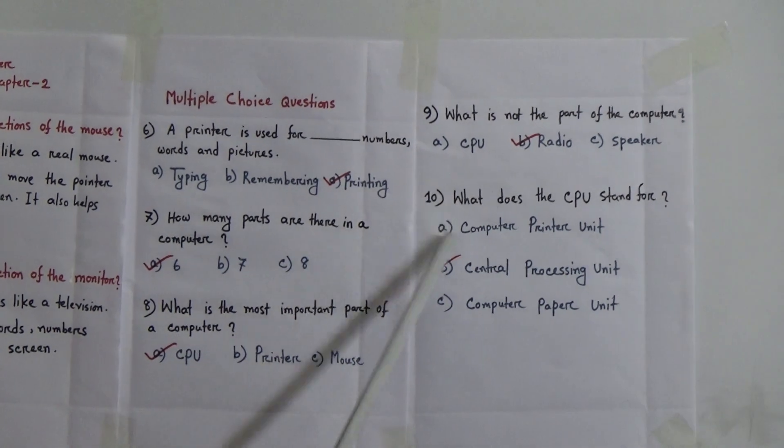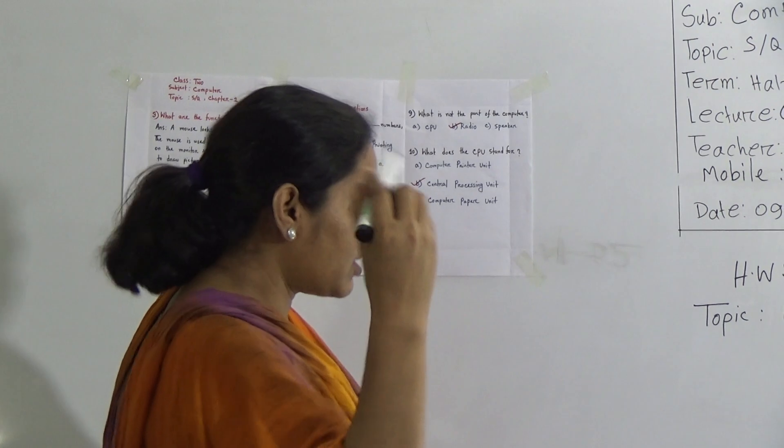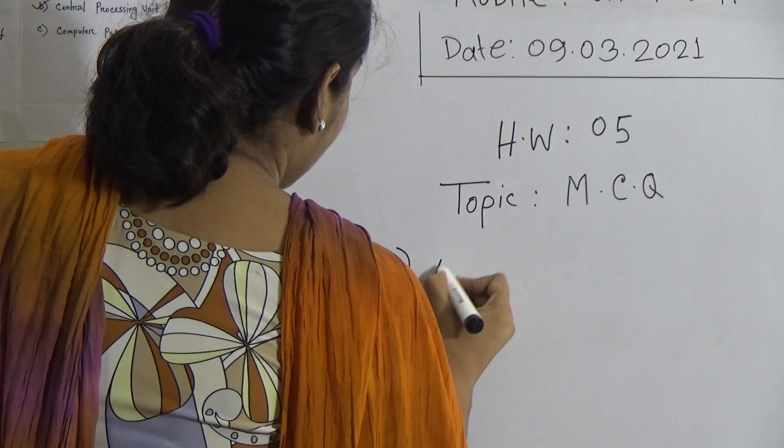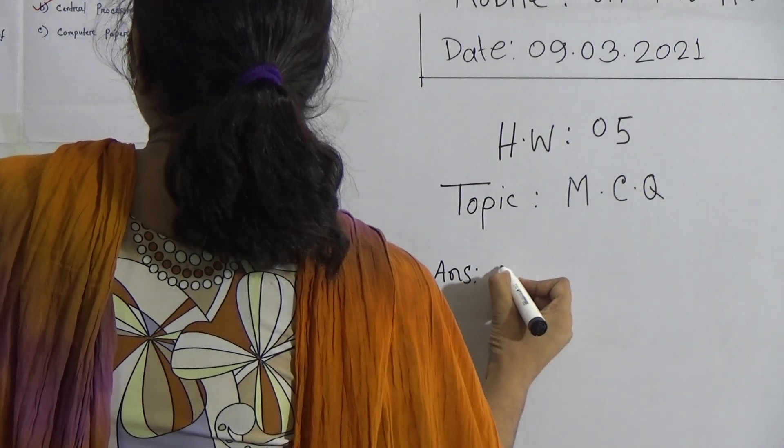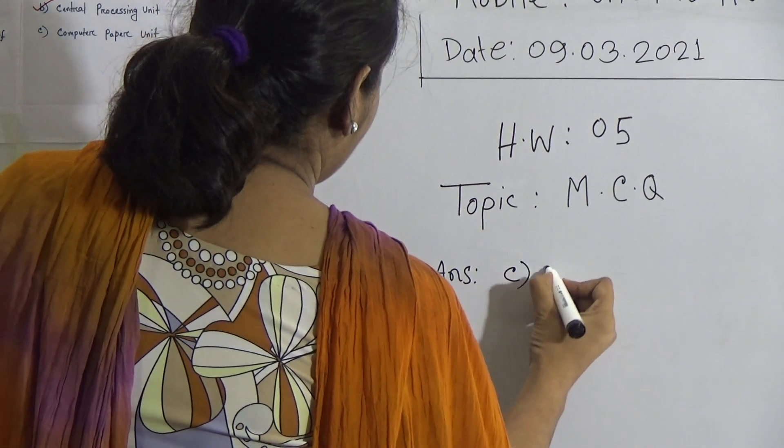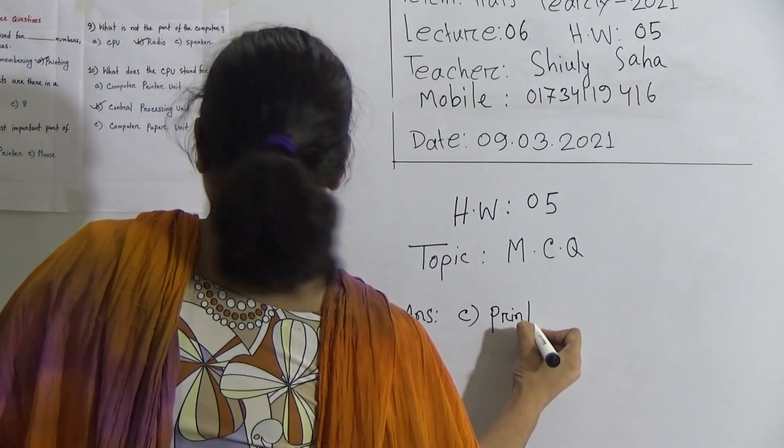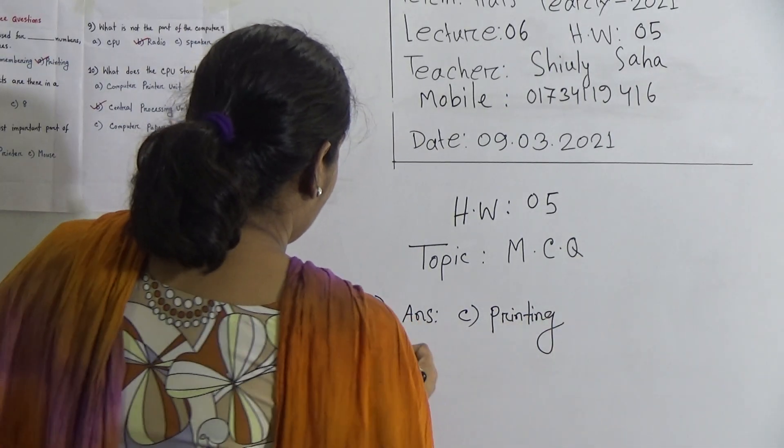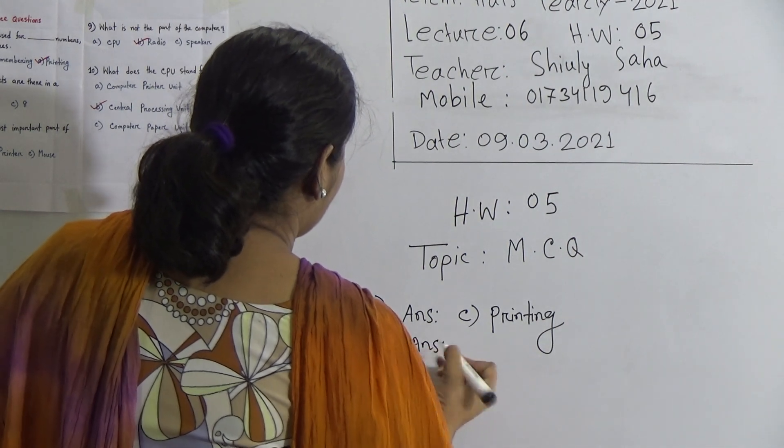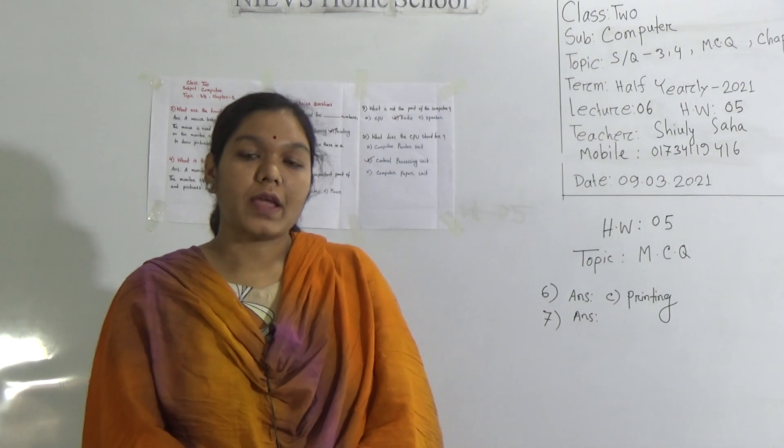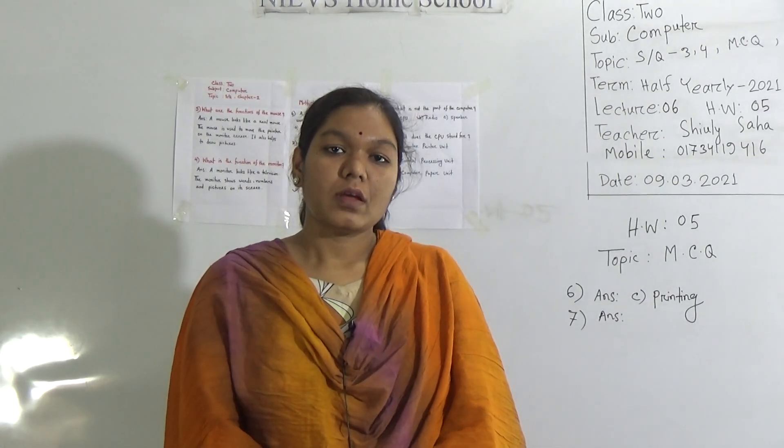Student, 6, 7, 8, 9, 10. These 5 will be your homework. So, you can write like that. At first, 6. Write only the answer. Answer C, printing. And 7, only answer. No need to write the question and other options. Only you can write the answer, 6 answer.